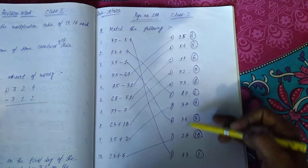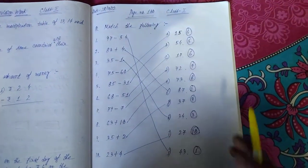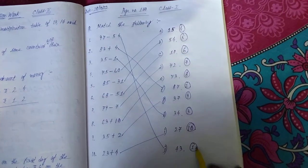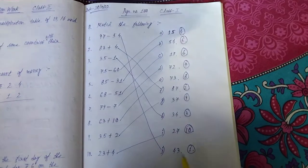You can do the numberings. I have done in both ways: by drawing lines also, and I have also put the numbers. You see number 1, 97 minus 54, so I have put here number 1. 43 is the answer.